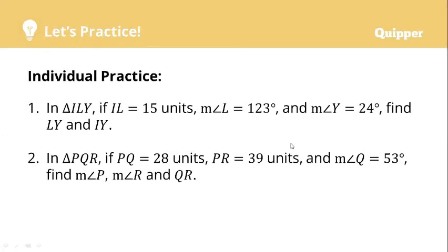If you have some questions, use the comments section. For this time, I want to leave this for your individual practice. In triangle ILY, if IL is 15 units, angle L is 123 degrees, and angle Y is 24 degrees, find LY and IY. For number 2, in triangle PQR, if PQ is 28 units, PR is 39 units, and angle Q is 53 degrees, find the measure of angles P and R and side QR. Use the comment section for your answers.